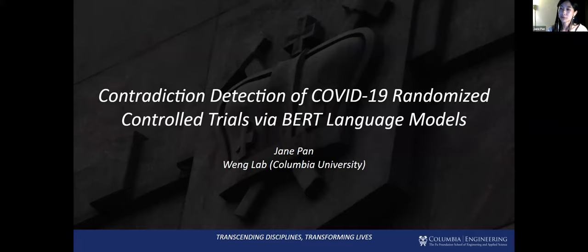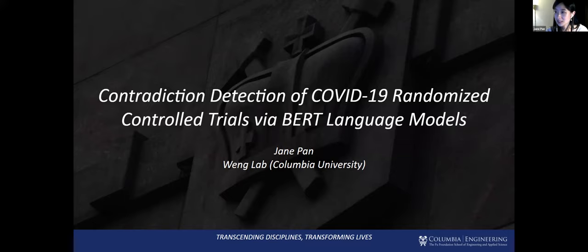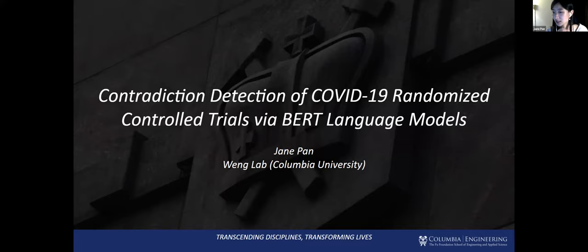I hope you've all been having a great start to fall. My name is Jane. I graduated from Columbia this past spring and I'm now at Princeton for graduate school. I'm very happy to present the work that I did during my senior year of undergrad with Professor Chun-Fa Weng from Columbia University's Data Science Institute. Our project investigates contradiction detection of COVID-19 randomized controlled studies using mass language models such as BERT.